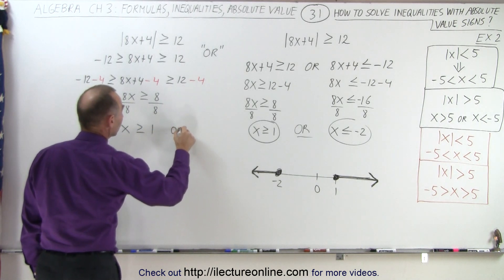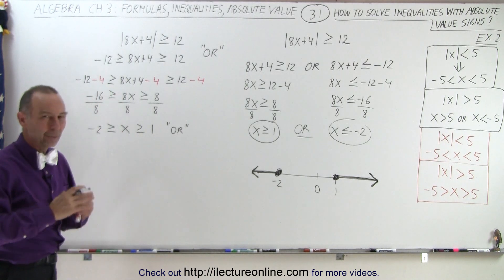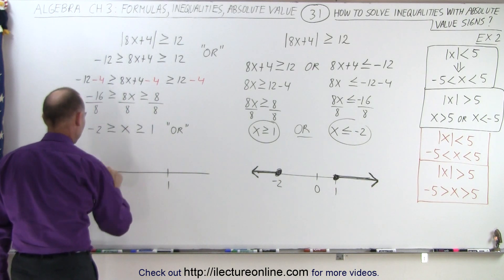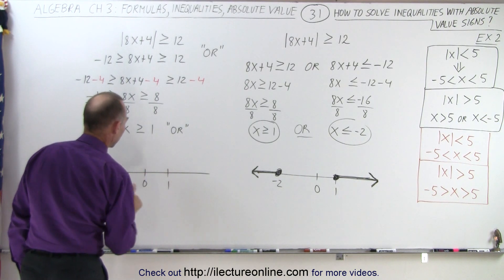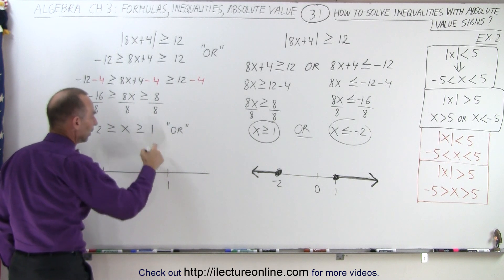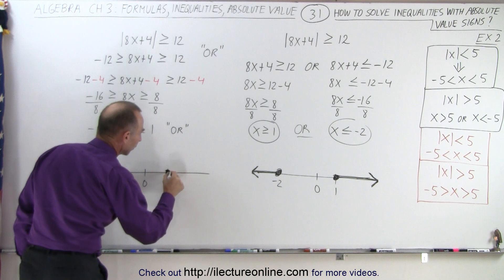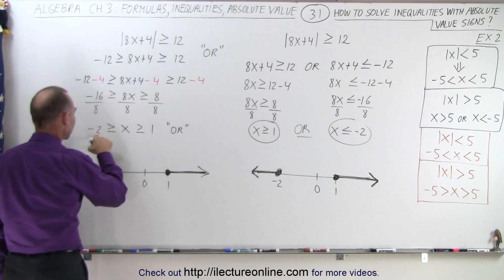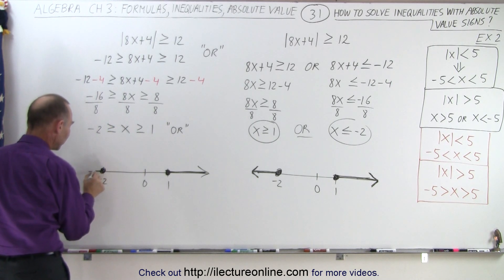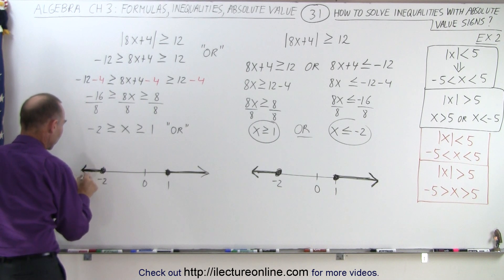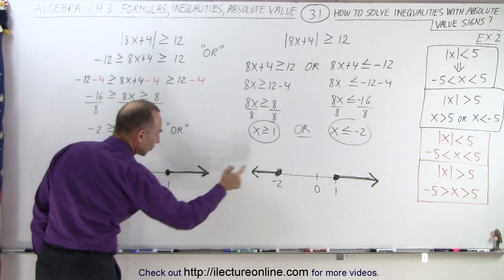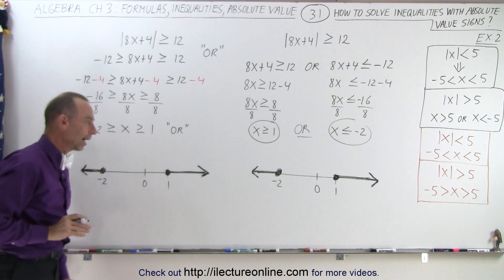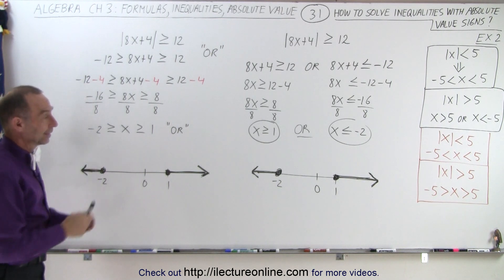Again, this is an or condition. Let's graph it: we have positive 1, negative 2, and 0 on the number line. x must be greater than or equal to 1 — that includes 1 or anything greater. Or, x must be less than or equal to negative 2 — that includes it or anything less, going in that direction. As you can see, you get the very same result as before. As long as you realize this is an or condition and take one solution at a time, whatever method you prefer, this is how you do it.